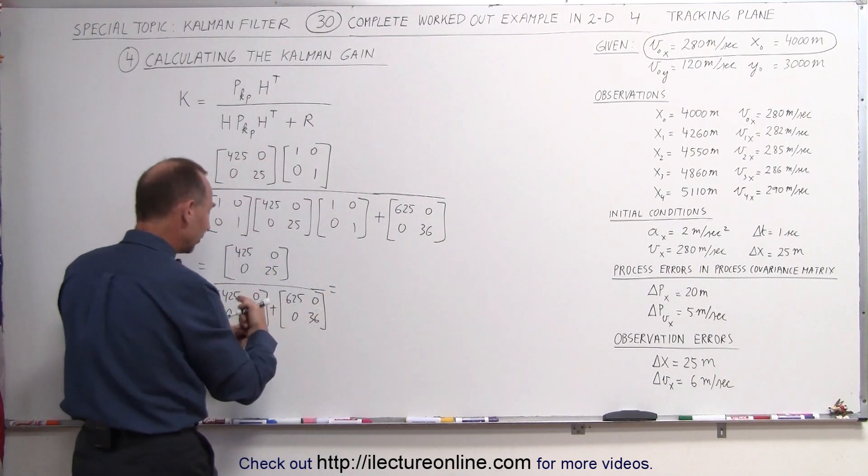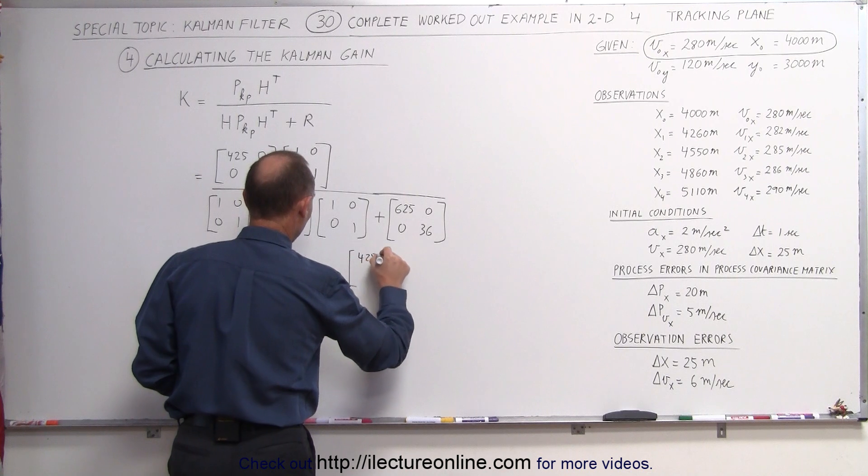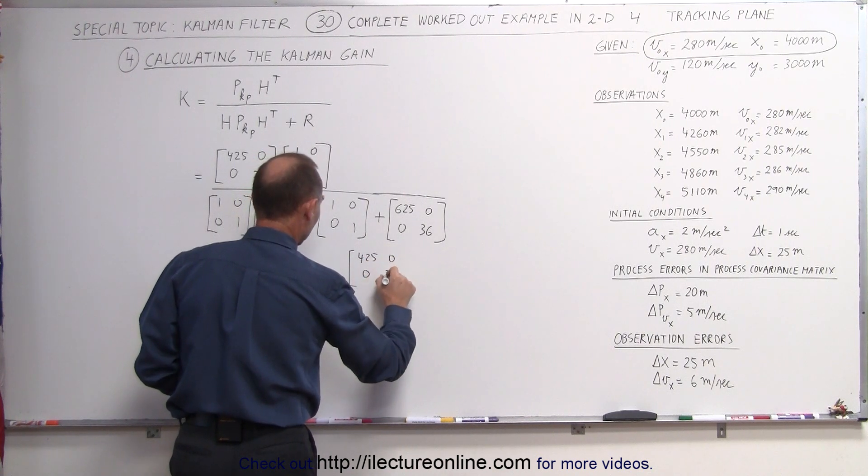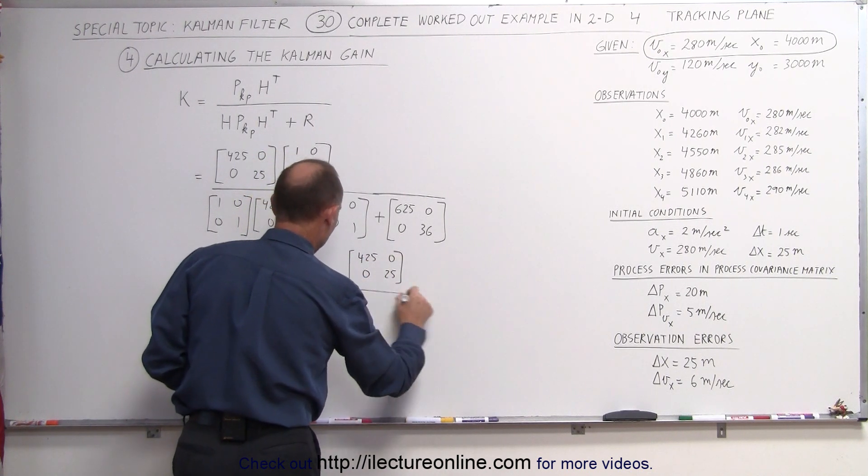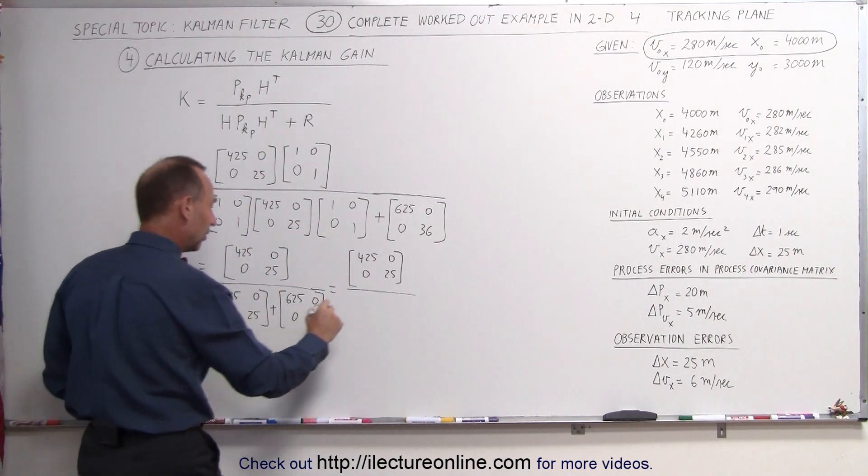So we go ahead and add the denominator. This becomes 425, 0, 0 and 25. And here in the denominator we get, if we add this together, that gives us 1050.